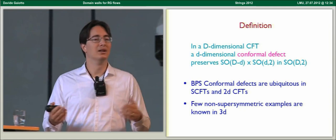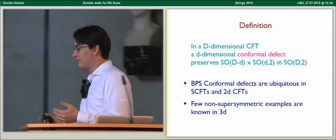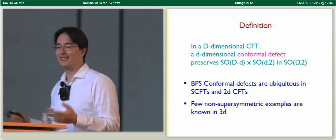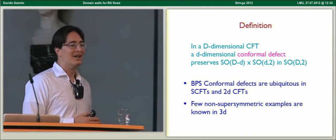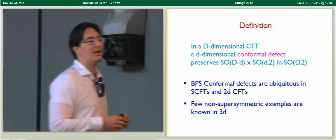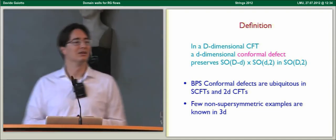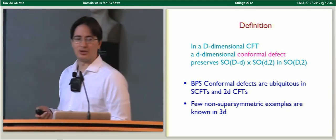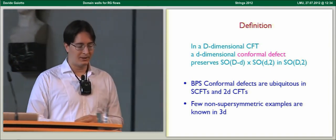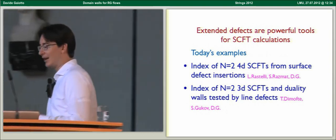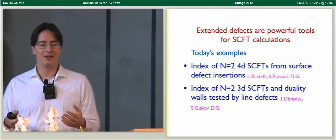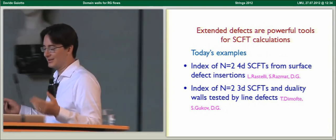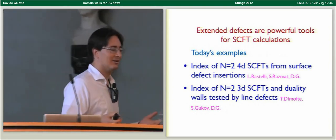Conformal defects in SUSY CFTs are relatively easy to construct and describe — there are many of them and they're rather useful. In two-dimensional conformal field theory, conformal boundary conditions are very well studied because we use them to make branes in string theory. There are fewer known examples of conformal defects in non-supersymmetric conformal field theories, but they seem to exist — for example, conformal boundary conditions for the 3D Ising model. This is definitely not a new idea; there have been many applications in the past.